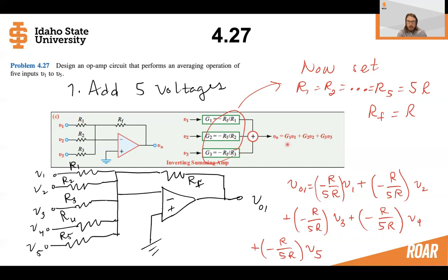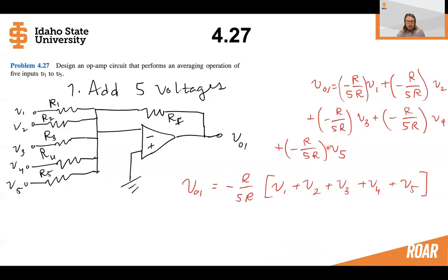Then if we write out the equation describing the voltage output on this inverting summing amplifier step, we get this voltage output where each one of the gains is minus R over 5R, or minus one fifth. Okay, so just showing now how each one of these gains is going to look in the total equation. And we can simplify it down so that it looks like this, where the voltage output of stage one here is equal to minus R over 5R, and the sum of all five of the voltages.